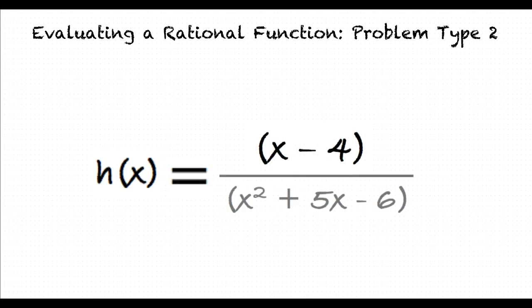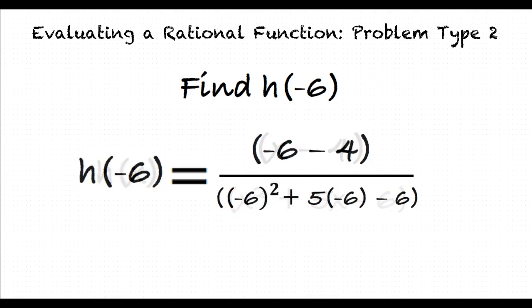Now let's look at another example. Given the function h of x equals x minus 4 over x squared plus 5x minus 6, we want to find h of negative 6. How should we start? First, we substitute negative 6 for x in our function. Exactly. This results in h of negative 6 equals negative 6 minus 4 over negative 6 squared plus 5 times negative 6 minus 6.